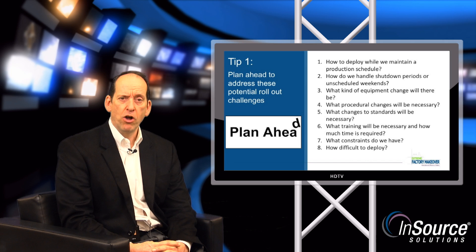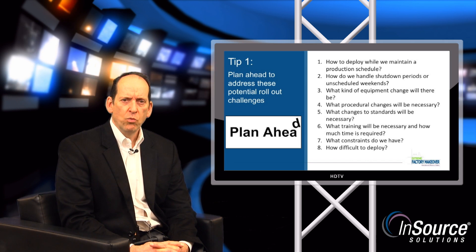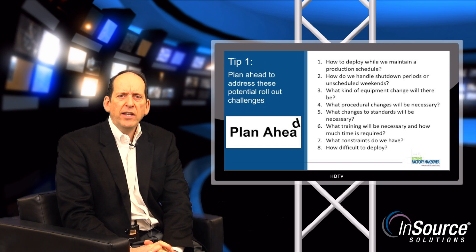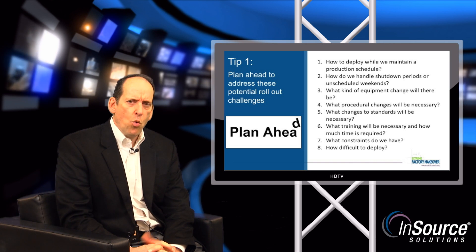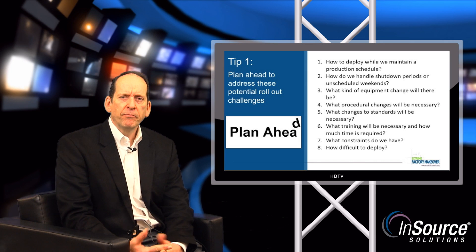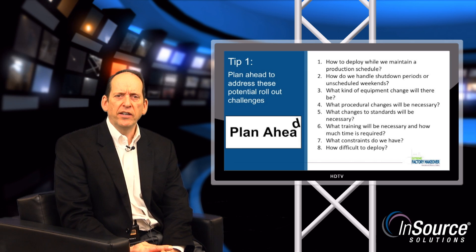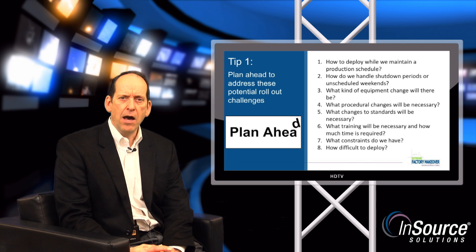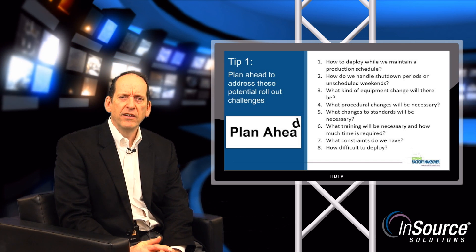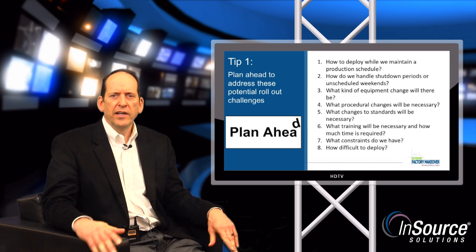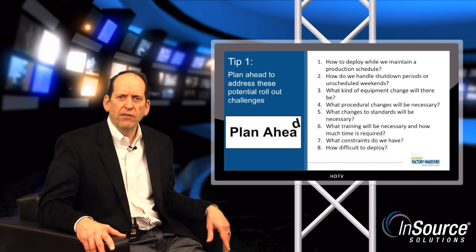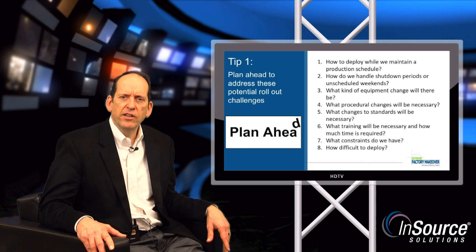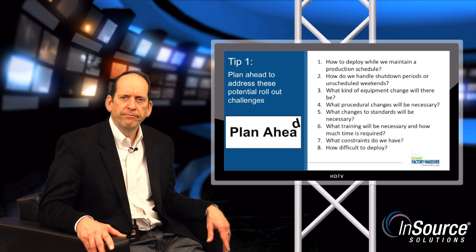Teams will need to address the following situations as they go through this project phase: one, how to deploy while we maintain a production schedule; two, how do we handle shutdown periods or unscheduled weekends; three, what kind of equipment changes will there be, if any. What procedural changes will be necessary and what changes for standards will be necessary as well. What training will be necessary and how much time is required. What constraints do we have and how difficult is this going to be to deploy. Remembering the reason for performing the work is to aid the plant on reaching their 10% OEE improvement.